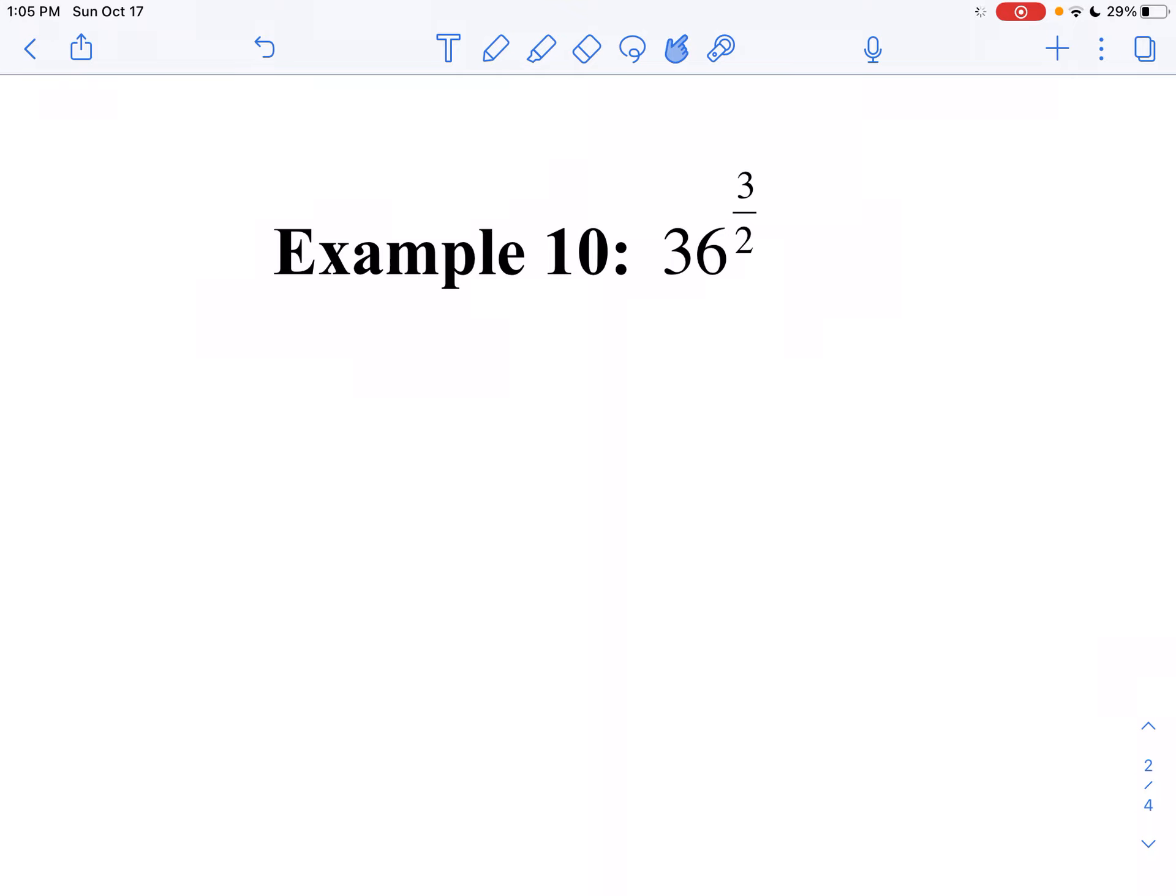This one I'll just do it one way. We're going to take 36 to the 3 halves power. Well what does that mean? That means the index is 2 so I don't have to write it, so it means the square root of 36 and then I'm going to cube that.